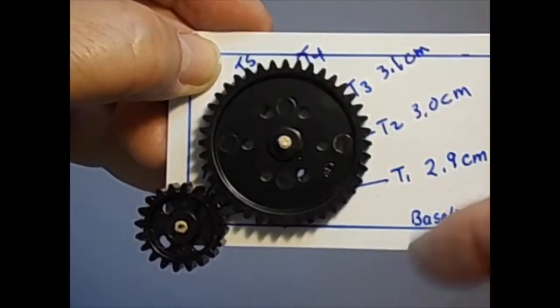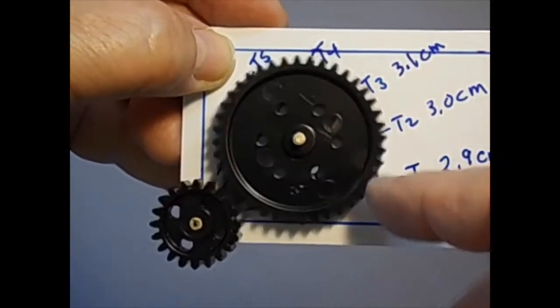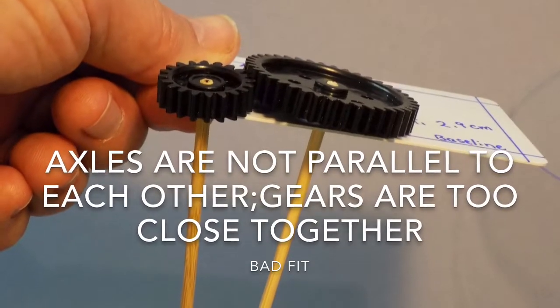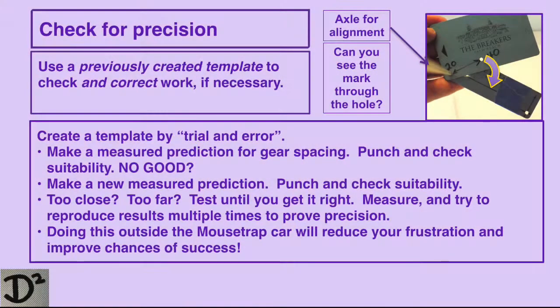What if the gears are too far apart to even touch? What if they're touching but don't turn smoothly or the axles are angled in towards each other? This is an indication of a bad fit. Trial and error is how this problem is solved.